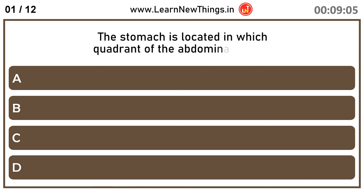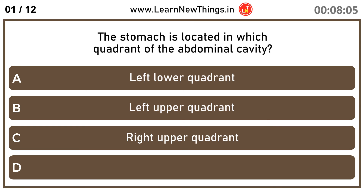The stomach is located in which quadrant of the abdominal cavity? Left upper quadrant.